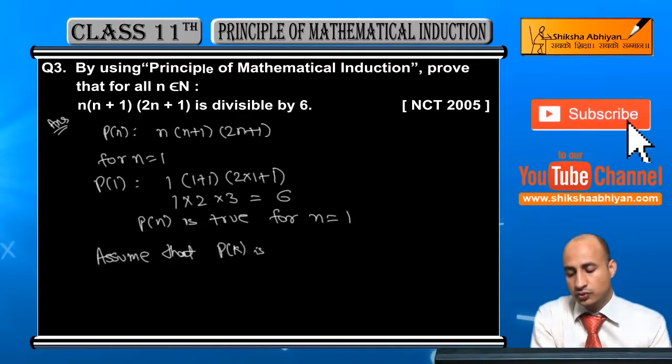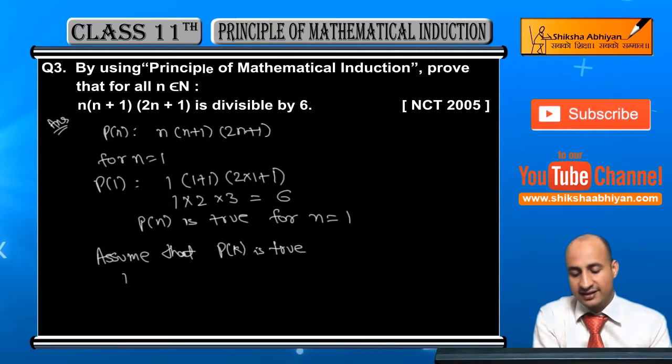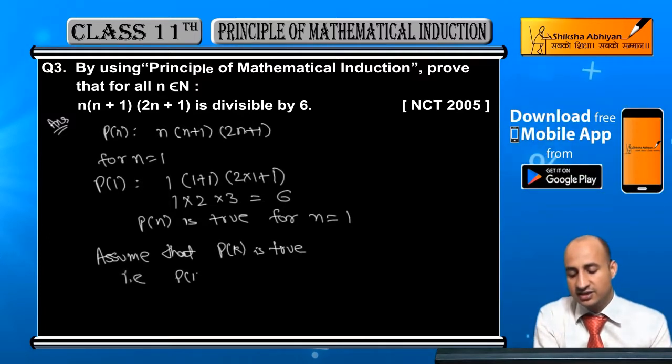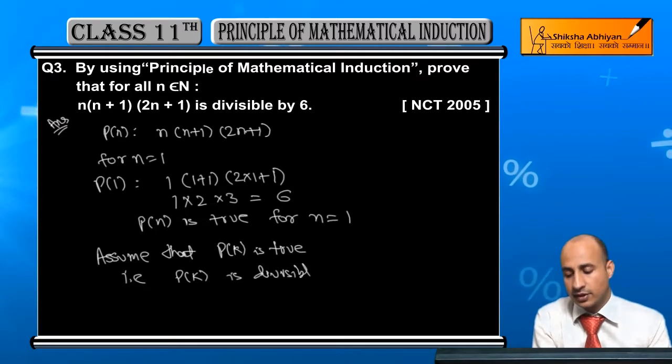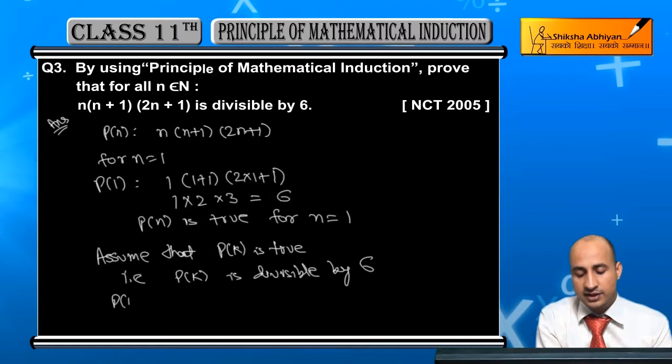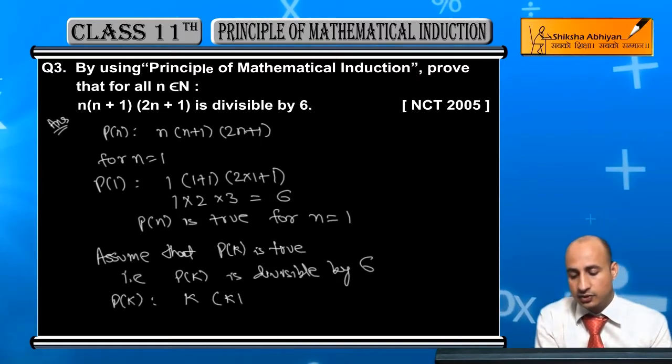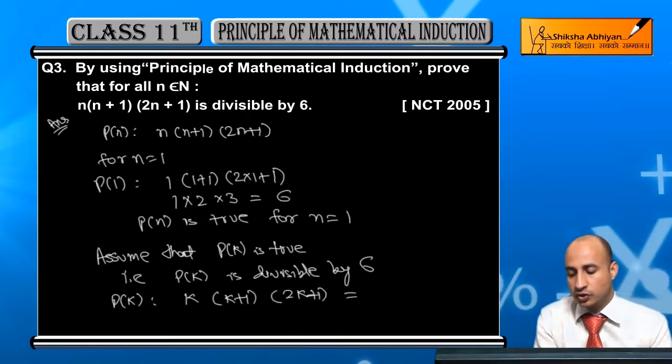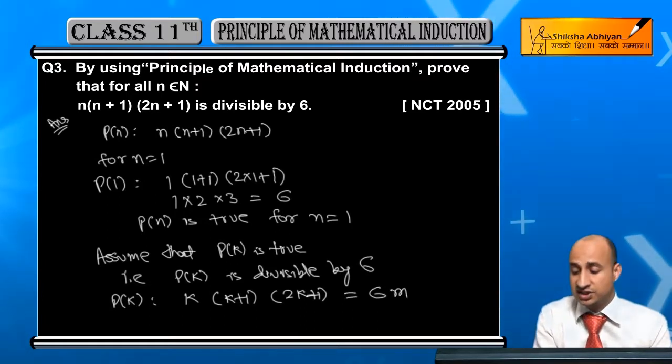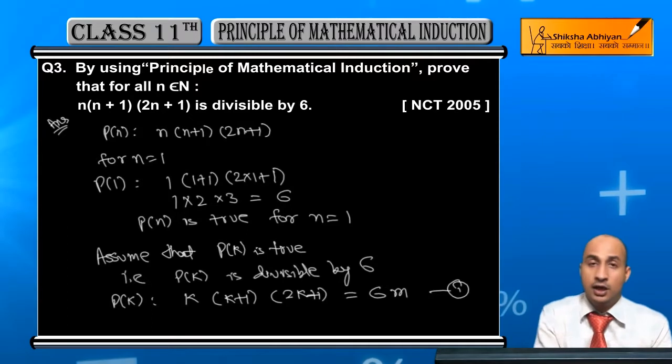P(N) is true. That is, P(N) is divisible by 6. P(N) is divisible by 6. Therefore, I can write P(N) equals N. Now,